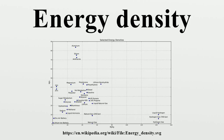The greatest energy source by far is mass itself. This energy, E = mc², where m = ρV, ρ is the mass per unit volume, V is the volume of the mass itself, and c is the speed of light. This energy, however, can be released only by the processes of nuclear fission, nuclear fusion, or the annihilation of some or all of the matter in the volume by matter-antimatter collisions.